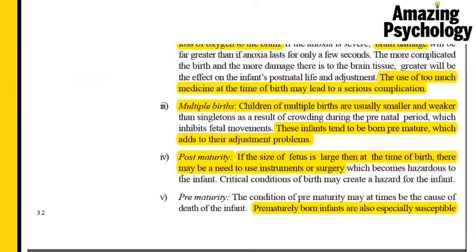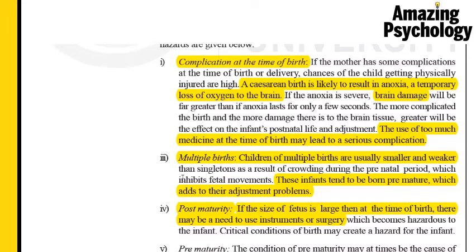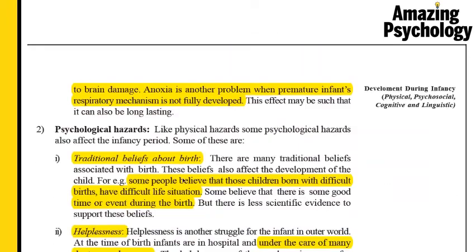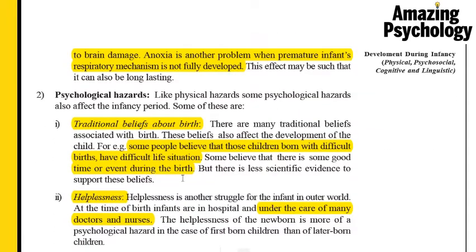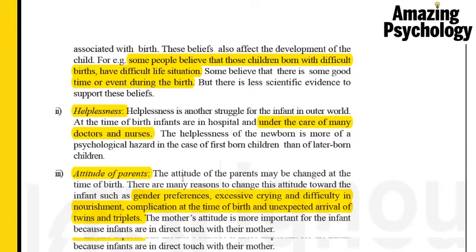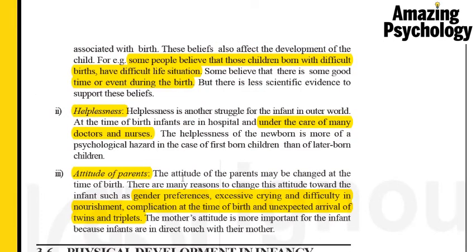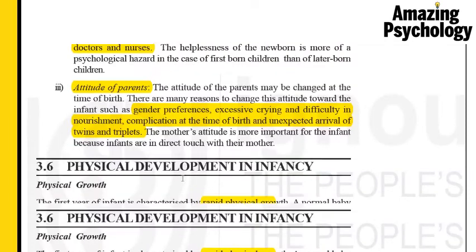So we've finished looking at the physical and psychological hazards. To recap: the physical hazards are complications at birth, multiple births, post-mature birth, and premature birth. The psychological hazards are traditional beliefs regarding birth, helplessness at the time of birth, and the attitude of the parents toward the child.